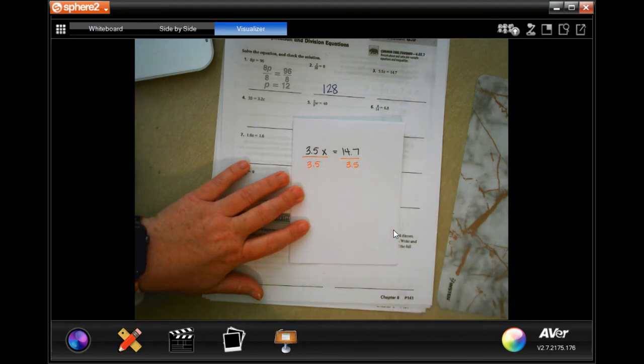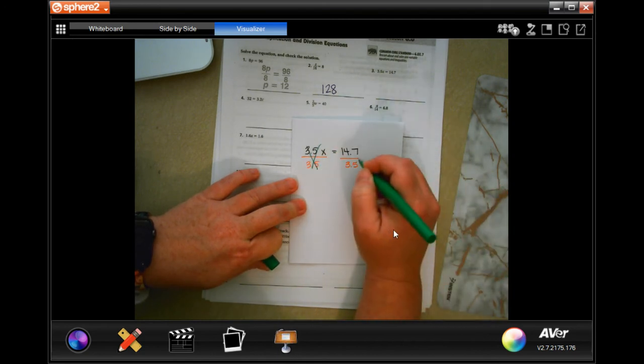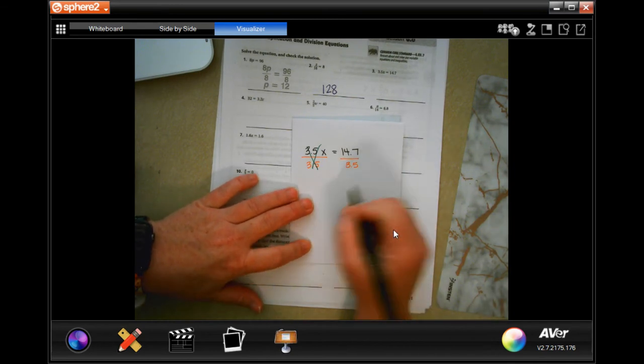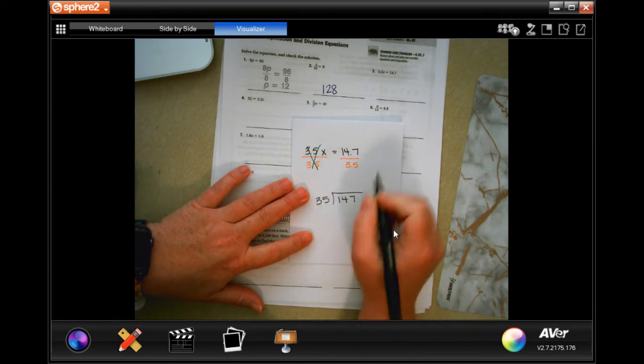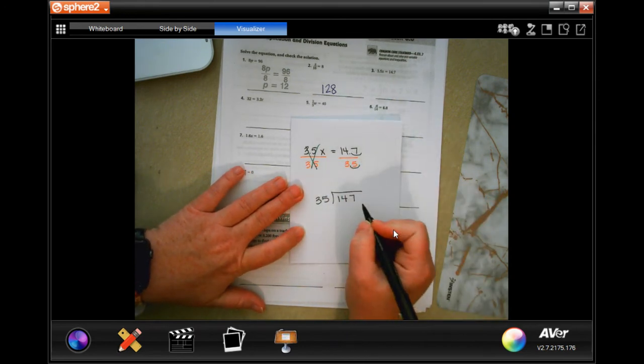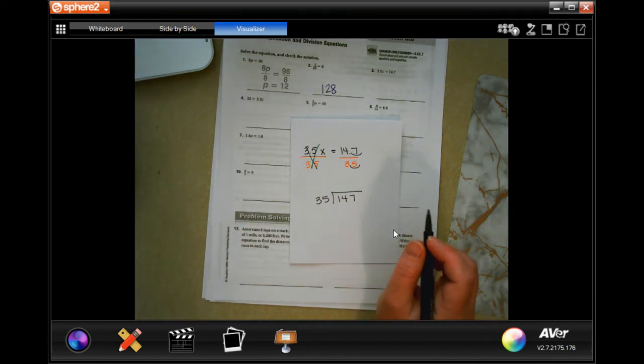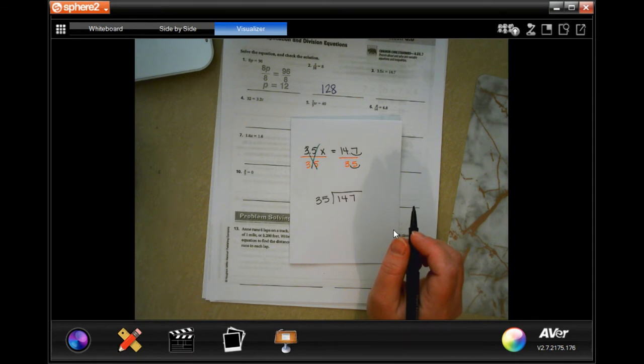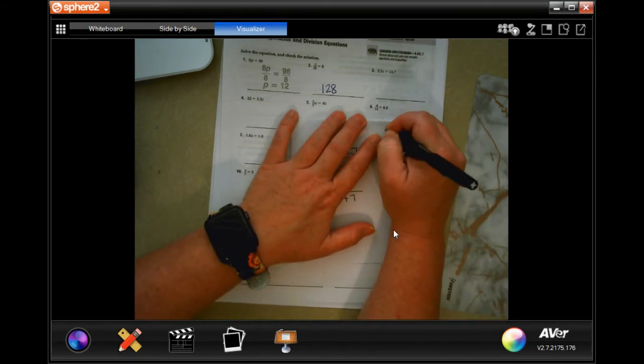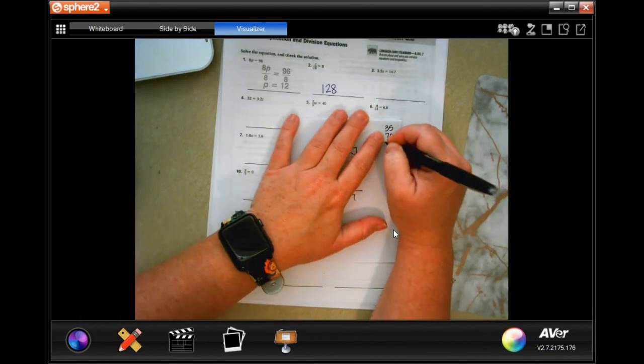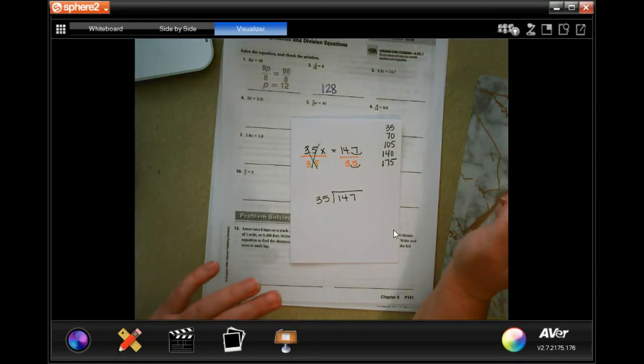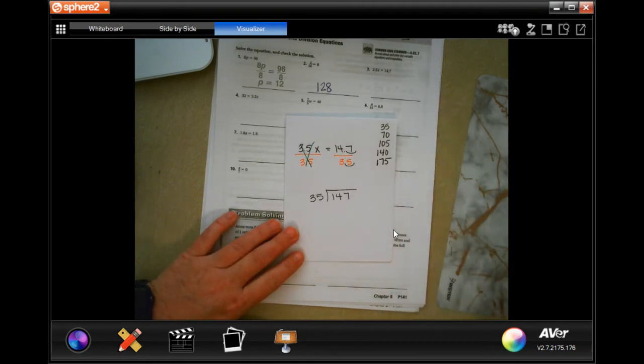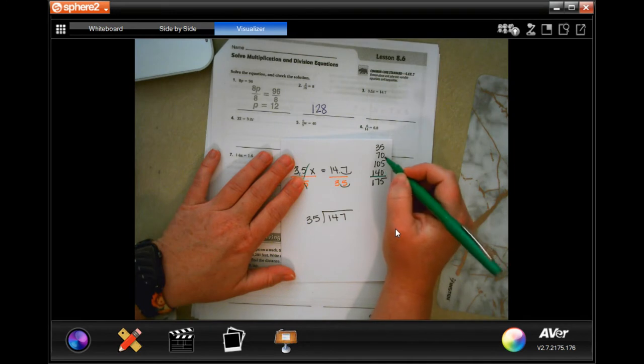Now, on this side, my 3.5s cancel out. And then on this side, I just have to do the math. And remember that when we're doing division, that we cannot have a decimal outside of the box. So, we have to move that once, move that once. So, now, I have 35 into 147. And I don't know my multiples of 35 past about 70, which is only 2. So, I'm going to write down multiples of 35.